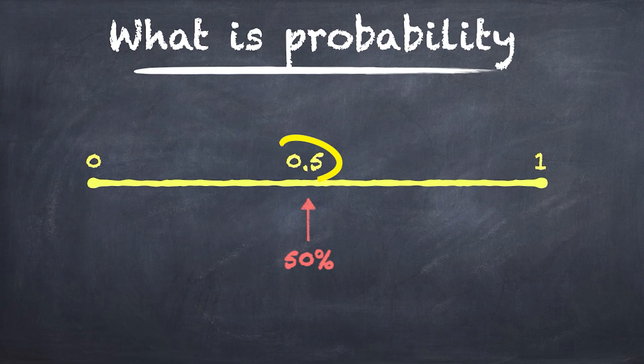So if the probability is 0.5, then we say there's a 50% chance of the thing of interest happening.